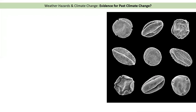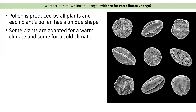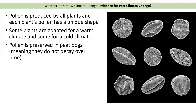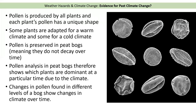The final piece of evidence is pollen analysis. All plants produce pollen, and pollen is like a fingerprint — every plant has a different shape to its pollen. Some plants are adapted for a warmer climate and some for a colder climate. Pollen gets preserved when it falls into a peat bog, which means it doesn't decay, and it stays trapped there for thousands of years. Scientists can extract the pollen, work out the age of the peat bog, and determine whether most of the plants were warm-climate or cold-climate plants, telling us what the climate was like. Changes in pollen found at different levels of a bog show changes in climate over time.